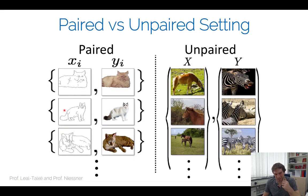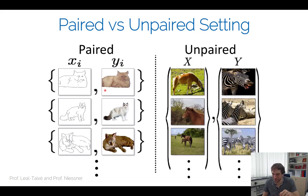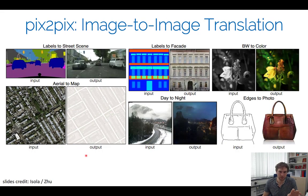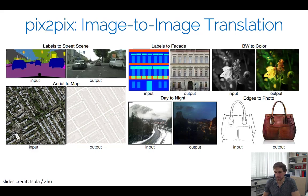The pix2pix paper (image-to-image translation) focuses on the paired setting and covers a wide range of tasks: semantic label maps to street scenes (Cityscapes), aerial satellite images to map abstractions (Google Maps), day-to-night, grayscale to color, and sketch to real image. In many cases, pairs are obtained automatically — for example, Google Maps inherently provides aligned satellite and map-visualization pairs.